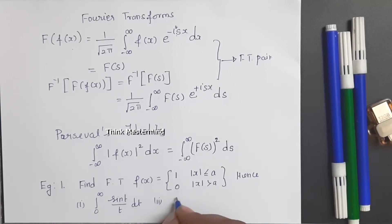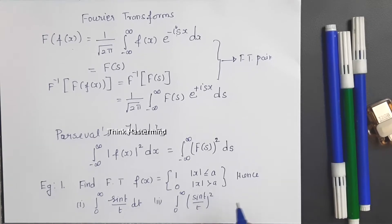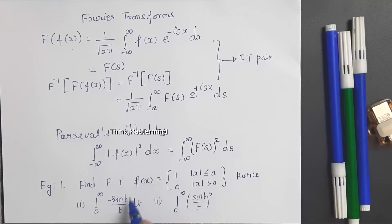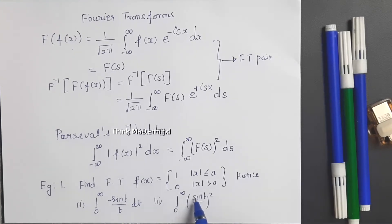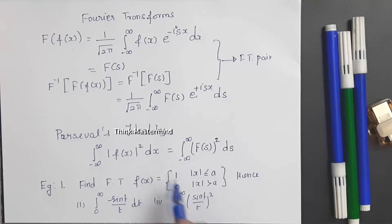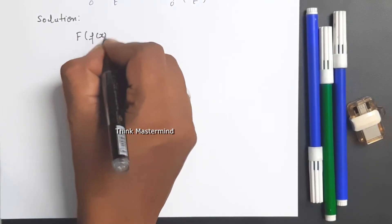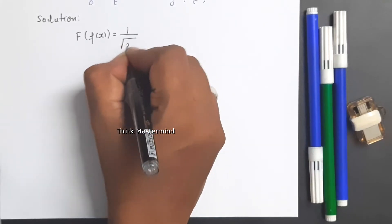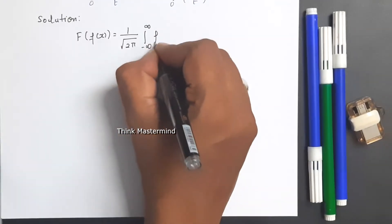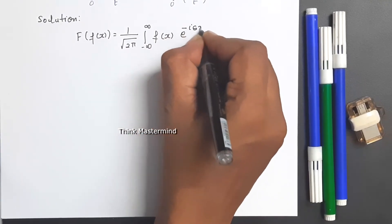The second deduction is the integral from 0 to infinity of (sin(t)/t)² dt. From the question itself we know that since our Fourier transform output will be in terms of sin divided by a variable, we use the inverse Fourier transform for the first deduction and Parseval's identity for the second. The Fourier transform formula is 1 over √(2π) times the integral from minus infinity to plus infinity of f(x) · e^(−isx) dx.